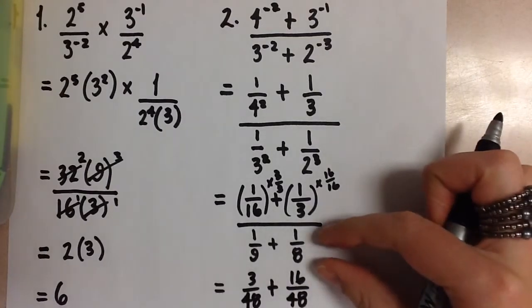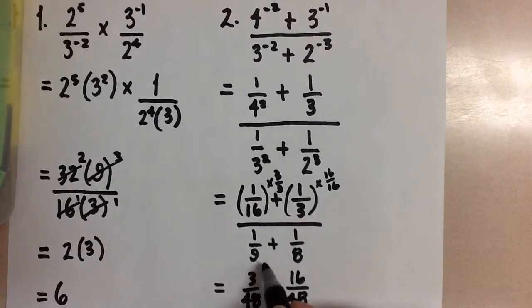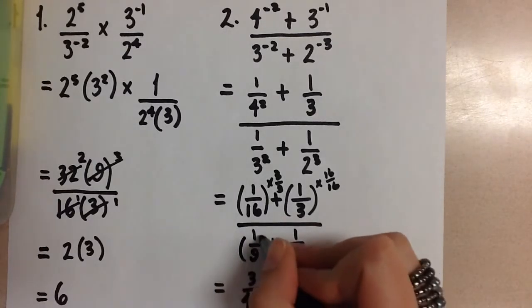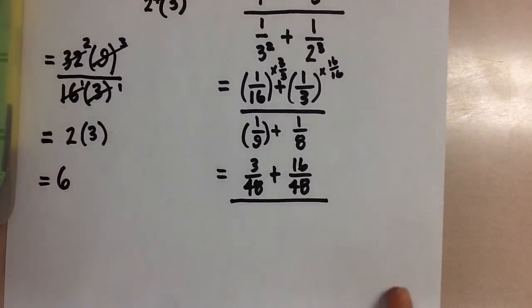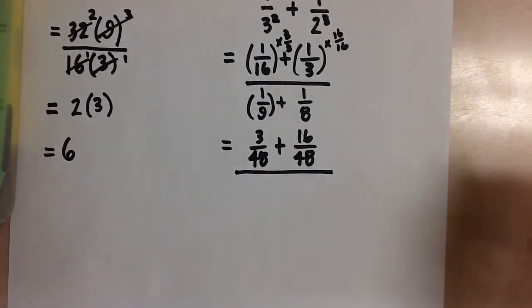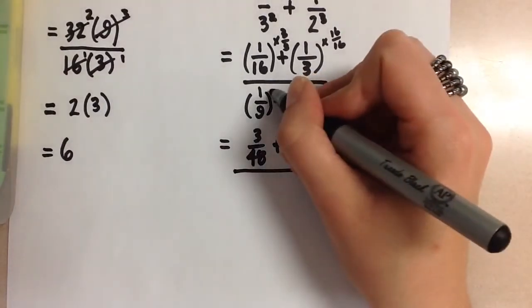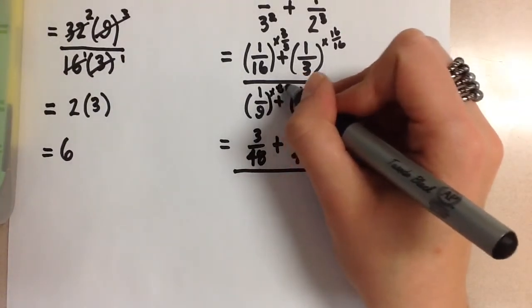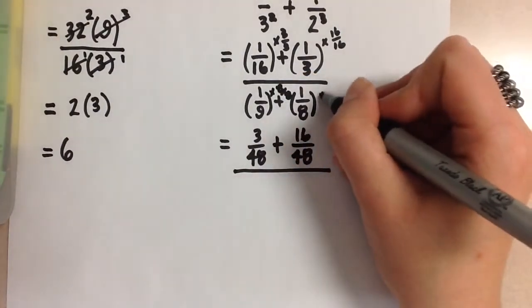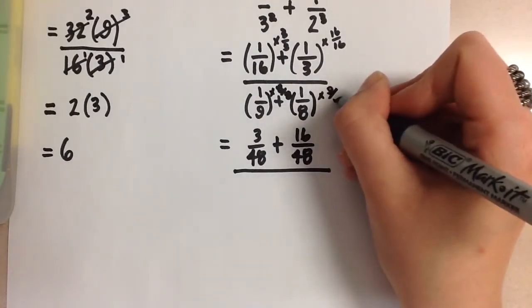The lowest common multiple between 9 and 8 is 72. So to get that common denominator of 72 we're going to multiply this by 8 over 8 and multiply this one by 9 over 9.